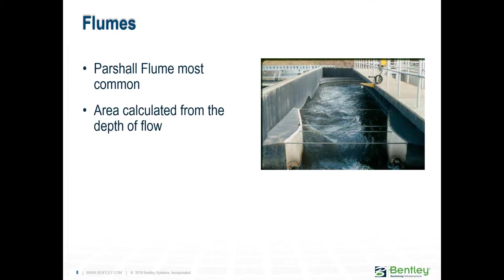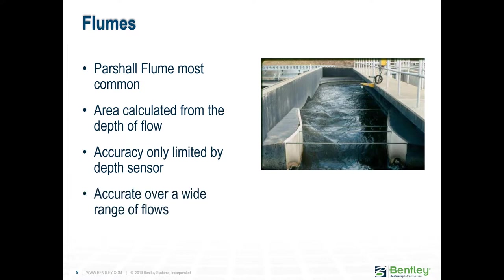Flumes overcome the siltation and head loss problems found in weirs. While Parshall flumes are the most commonly used configuration, several other configurations are also used, including the Palmer-Bowlus flumes, H flumes, Leopold-Lagco flumes, and trapezoidal flumes, each with its own advantages and disadvantages.